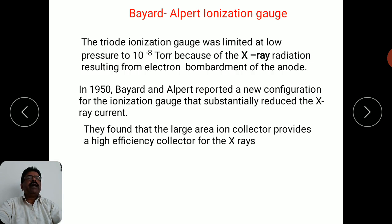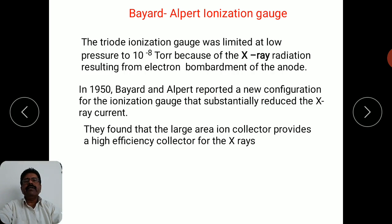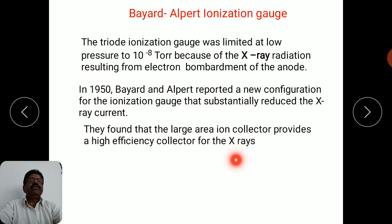They found that the large area ion collector provides a high efficiency collector for X-rays. In the triode type of ionization gauge, the area of the ion collector is too large, and because of this large area, X-rays are collected very efficiently. This high efficiency collection of X-rays is the fundamental limitation in the triode type of ionization gauge.